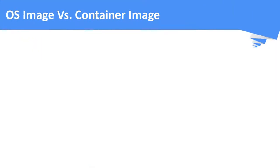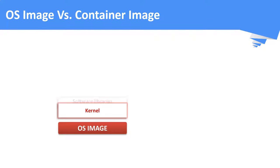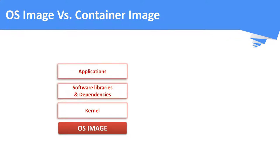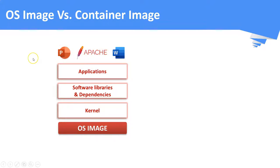What is the difference between an OS image and a container image? An OS image contains the OS kernel, software libraries, and on top of that, the vendor-provided applications. If the required application is not present by default, you have to install it once the OS image is installed on a machine — in this case, Apache. Apache won't be there by default in an operating system, and whether you use those applications or not, all of them will be running inside the machine, consuming heavy resources.